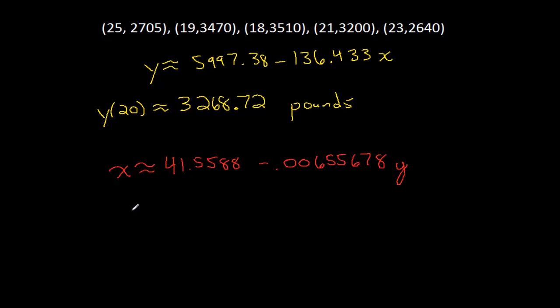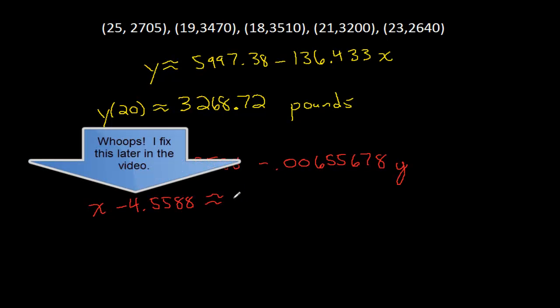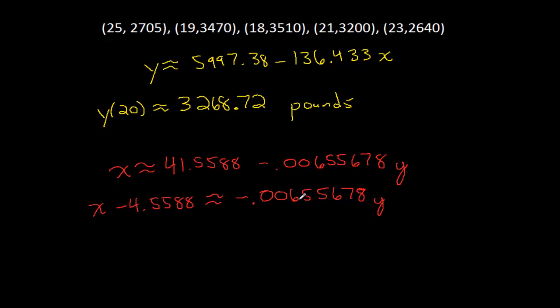To compare these two lines I want to get them into the same form, so I'll solve this one for y. I get x minus 41.5588 ≈ -0.00655678y. I'm going out to a lot of decimal places because I want you to be convinced that this difference is not due to rounding - there's a little bit of rounding but not much. I'm going to divide both sides by this decimal using the distributive property.